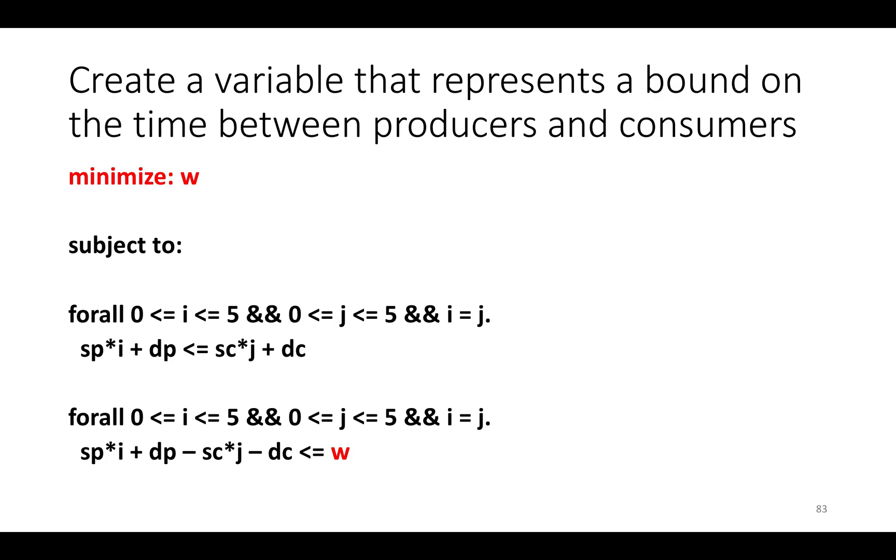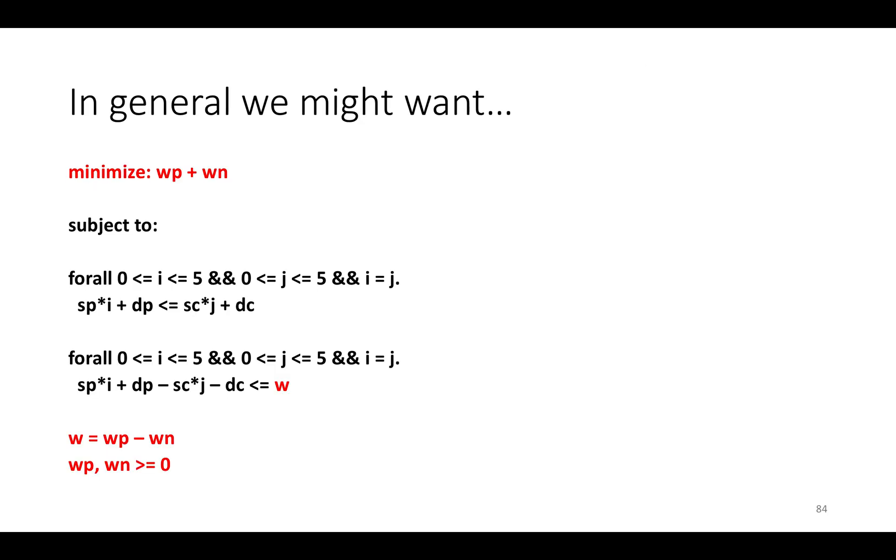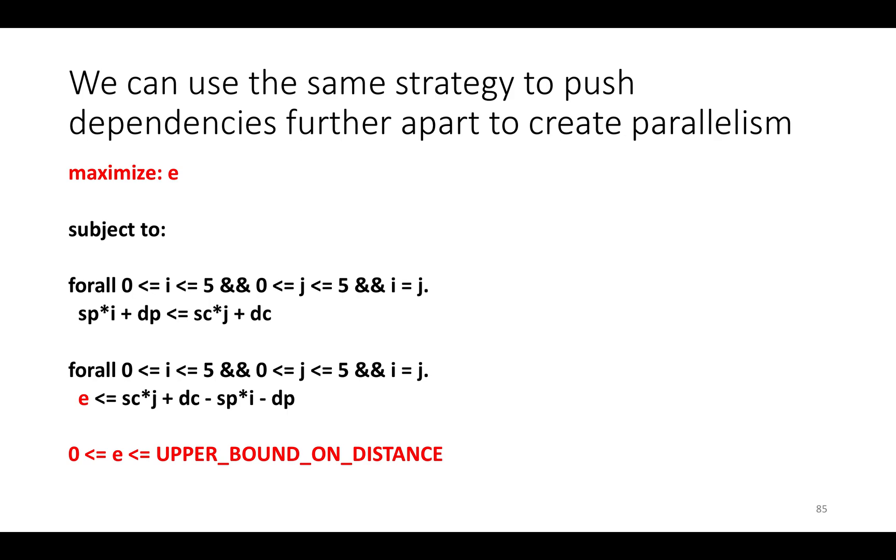So actually, as w gets smaller, the locality in the schedule gets better, and so in a sense w is capturing how much locality there is in our calculated schedule. We'd apply Farkas Lemma to each of these universally quantified constraints because again it's actually a non-negativity constraint on an affine form, and we would solve it using ILP and get an answer. In fact, in general we might want something a little bit more sophisticated as an ILP encoding for locality, but I'm not going to belabor this point. There are more complex and more sophisticated ways to encode the locality of a schedule using this kind of constraint, but you can read about those in papers.